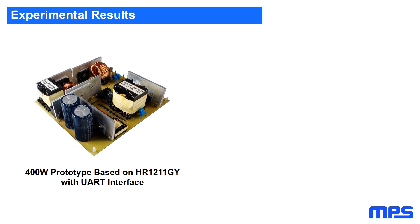This theory has been verified on a 400W prototype based on HR1211. HR1211 as a digital PFC and LLC combo controller has a UART interface that can program the chip and also read instant system states such as reference current and input voltage, which are used to implement the proposed equation for power estimation.